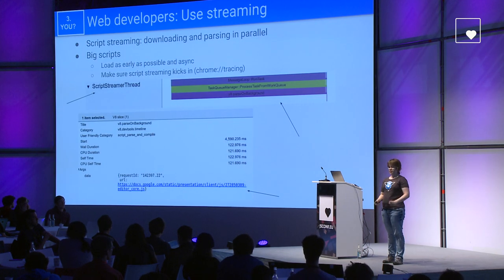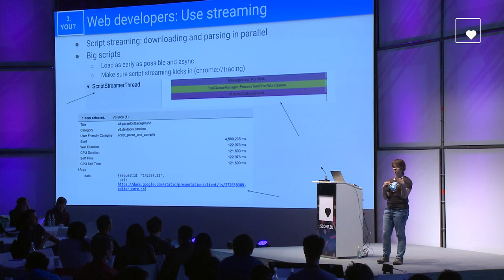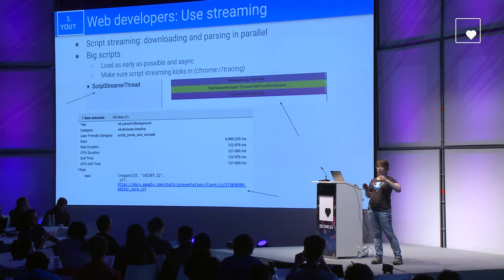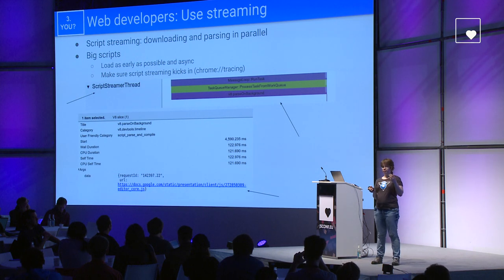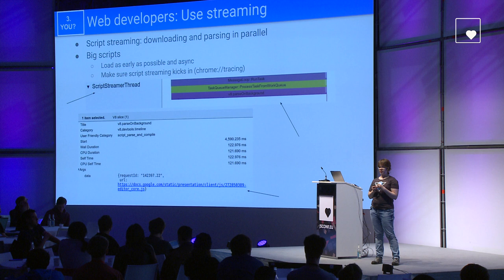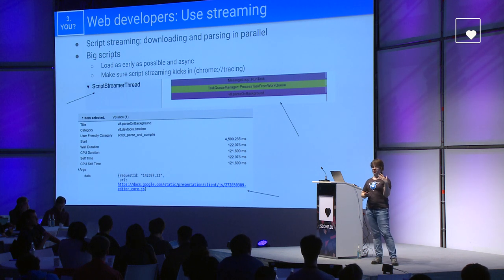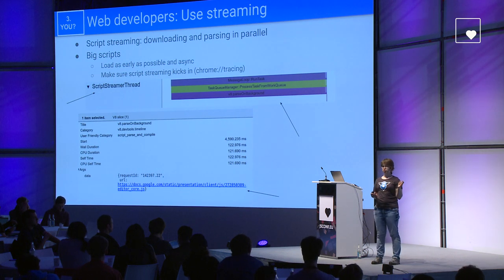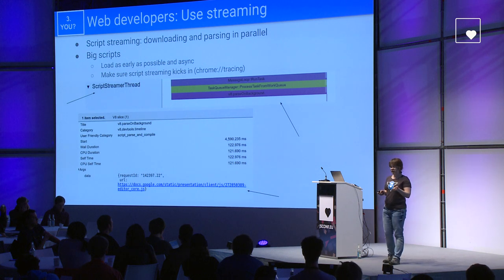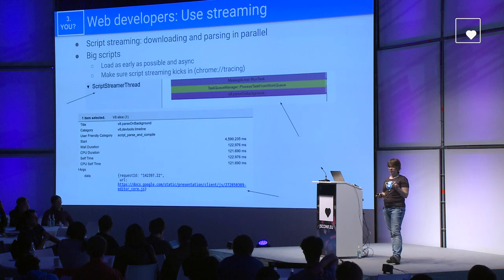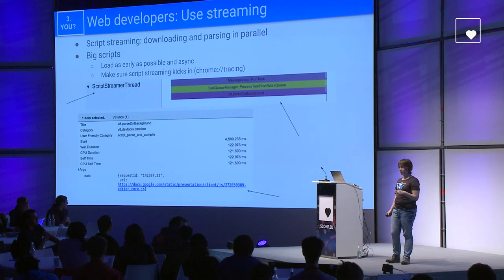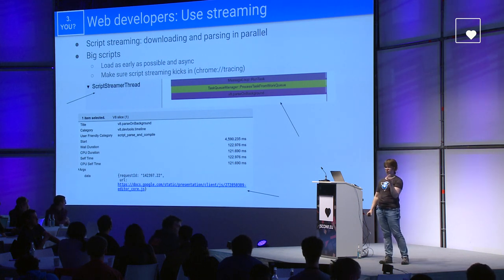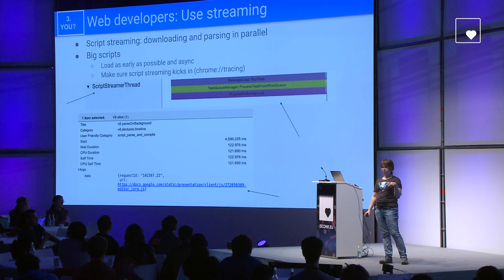I already mentioned streaming — that means we start parsing a script while it's downloading, before it has finished downloading the full script. It makes sense to use this for big scripts, and to use it optimally, you should load them as early as possible on async so that the streamer kicks in. You can also make sure the streamer is really streaming your script with Chrome tracing, where you'll see the streamer thread and an event showing the name of the script that got streamed.